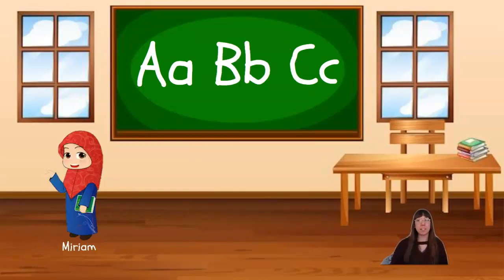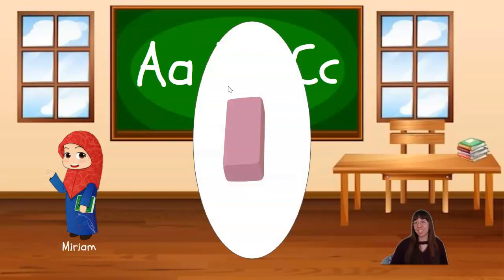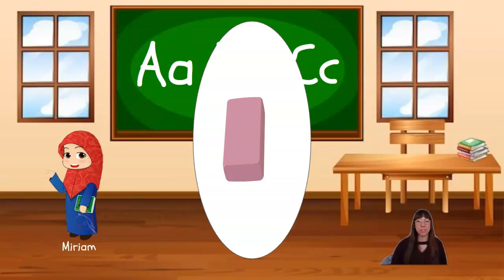And last but not least is Miriam. Miriam, what did you find for us to measure? An eraser. Lovely. An eraser is something small, so it's not going to take very many paperclips for us to measure. But let's start at the bottom and see how tall our eraser is in paperclips. One, two. Our eraser is just two paperclips tall. That makes it much shorter than many of the other things we measured today.